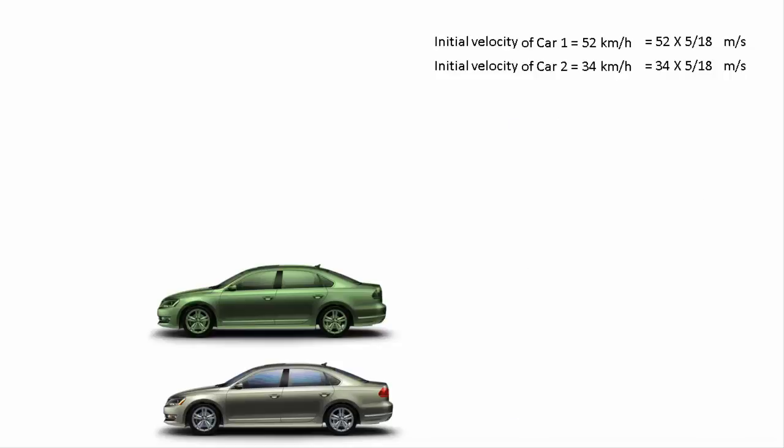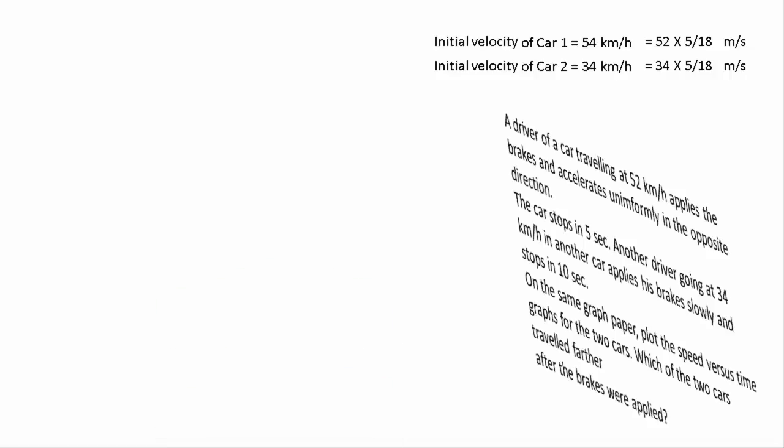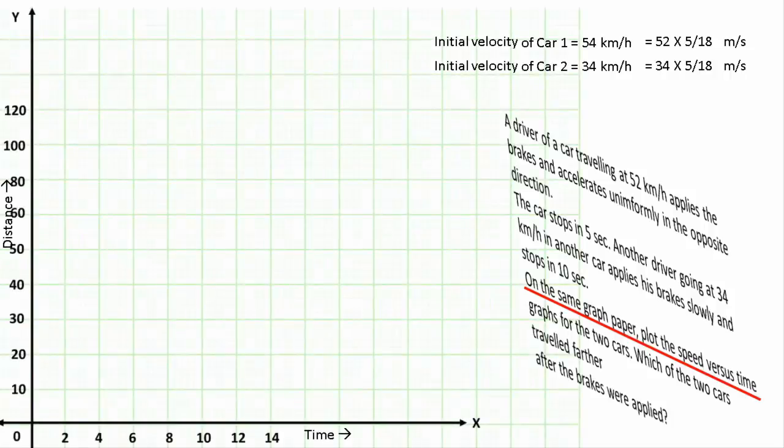Now we have been informed these cars have applied brake, that means the speed becomes zero. If you read the question carefully, we have to plot the speed versus time graph. So here we'll be taking speed versus time graph where we are taking time on x-axis and speed on y-axis.